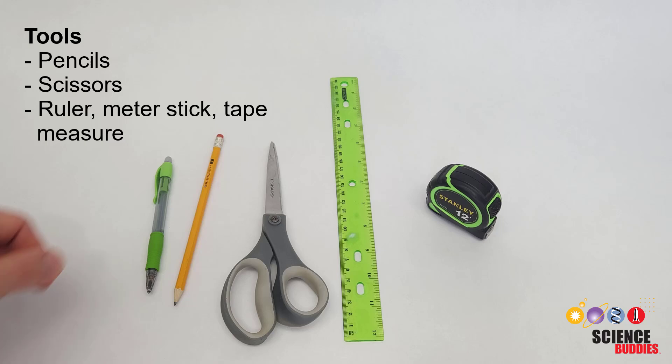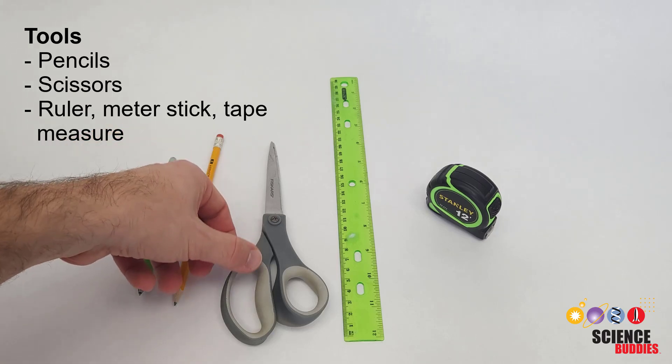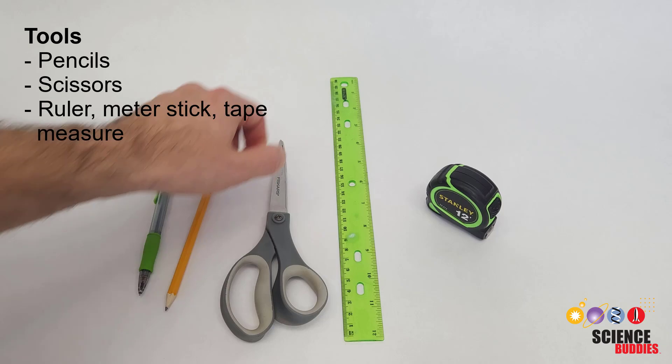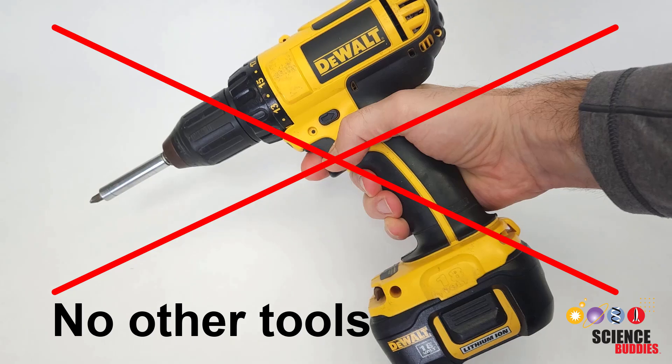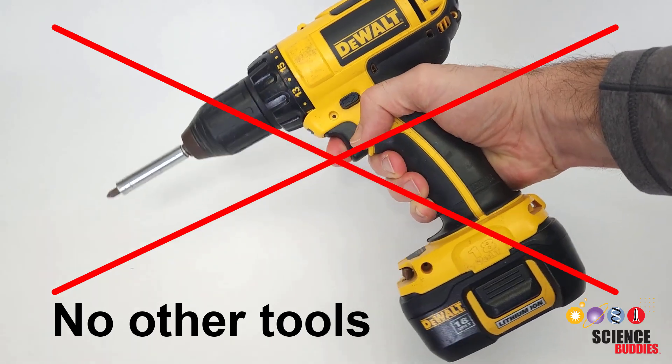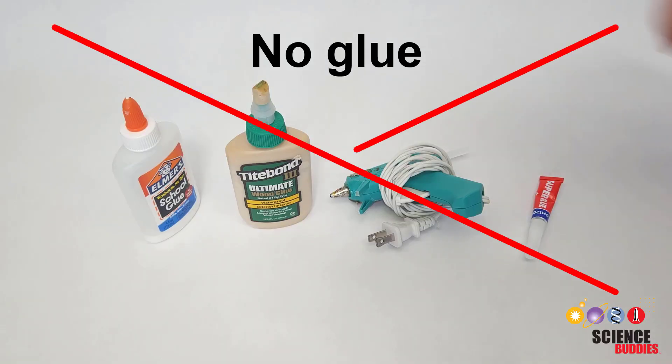You can use pencils, scissors, and a ruler, meter stick, and or tape measure as tools to help build your device. Other tools like power tools, 3D printers, and laser cutters are not allowed. Neither is any type of glue.